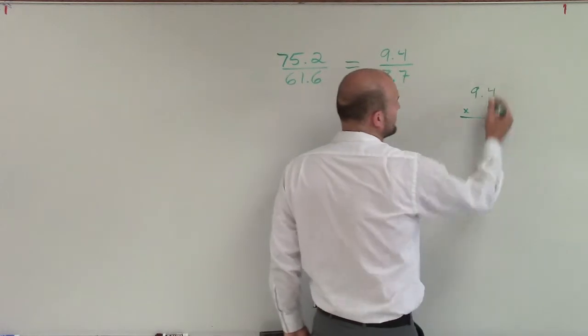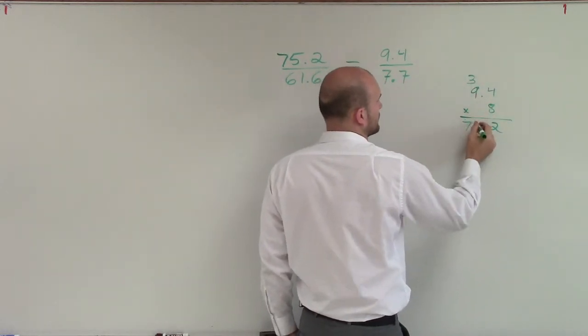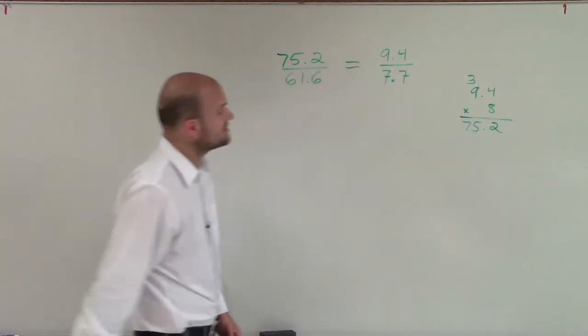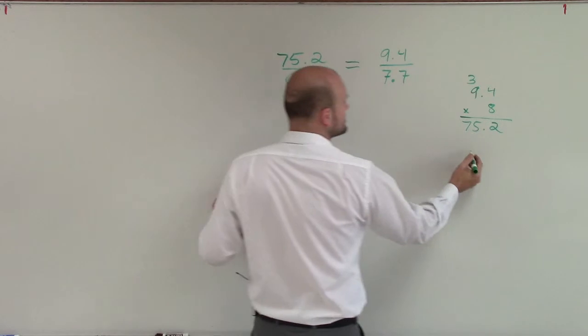So when I multiply here, I get 32, and so I end up noticing that when I multiply by 8, I get 75.2. So then I'll check 7.7.